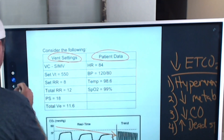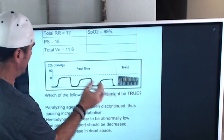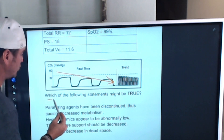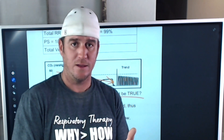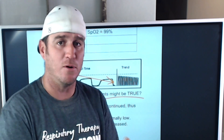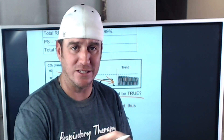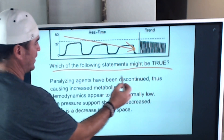We know that these are the four things that might cause a decrease in end-tidal CO2. The question asks which of the following statements might be true. This requires you to break down each answer — it's more like a multiple-multiple question. You have to evaluate each answer: that one's false, that one's false, that one's false — there's only one true answer.